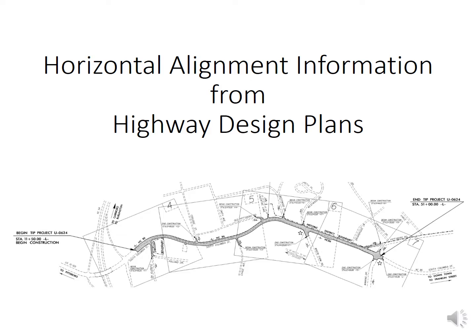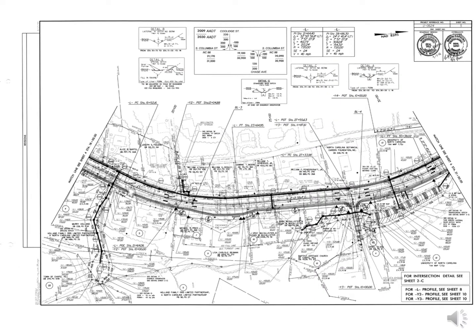In this video we'll cover horizontal alignment information that can be extracted from highway design plans. We'll take a look at an example and talk about how we can look at information for both the curves and the tangents of a highway design project. This is an example of a plan sheet — one that we're going to extract information from. These can have lots of information or just be very specifically focused on horizontal curve or other elements.